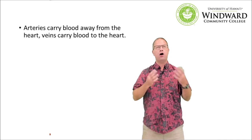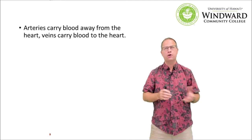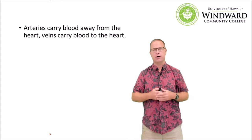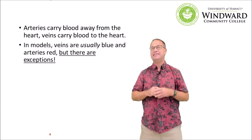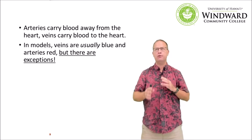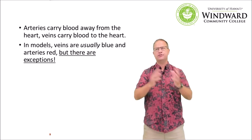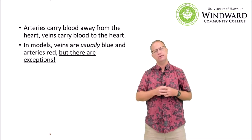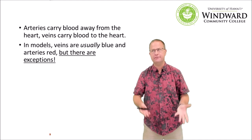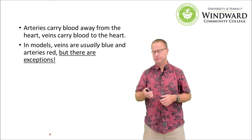Before we go on to talk about the different blood vessels in the body, we need to go over a few key concepts helpful in memorizing blood vessels. Firstly, arteries and veins — what's the difference? Arteries carry blood away from the heart; veins bring blood back to the heart. In models, arteries tend to be red and veins tend to be blue, but there are exceptions. The pulmonary artery and pulmonary trunk bring oxygen-poor blood away from the heart to the lungs, so they're blue, and the pulmonary veins are red because they carry oxygen-rich blood.